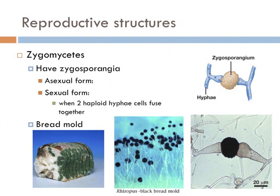As in most zygomycetes, asexual reproduction is the most common form of reproduction in bread mold. Sexual reproduction does occur when two haploid hyphae of different organisms are in close proximity to each other and they can fuse. These sporangia have both diploid and haploid cells within them. Whenever they fuse, the new structure is called a zygosporangium, and you can actually see that there's a bridge between two different organisms. The haploid spores within each one of these zygosporangia connect with each other and form a diploid organism — basically, you can think about this as fungal sex.